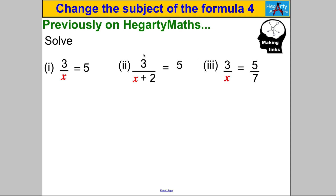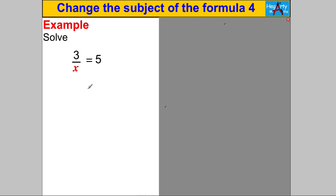Let's start by solving these individually and then use that to help us change the subject of the formula where X is on the denominator. Imagine someone asked you to solve that. The long way: you don't like X on the denominator, so you multiply both sides by X — that cancels the divide by X — and you get 3 is equal to 5X. Then divide both sides by 5 and you get X is equal to three fifths.